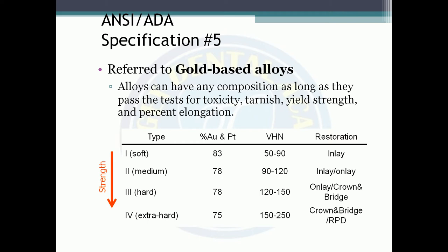There are four types of gold-based alloys classified according to strength. Type 1 is soft, type 2 is medium, type 3 is hard, and type 4 is extra hard. Gold and platinum content: type 1 has 83%, type 2 has 78%, type 3 has 78%, and type 4 has 75% gold and platinum.